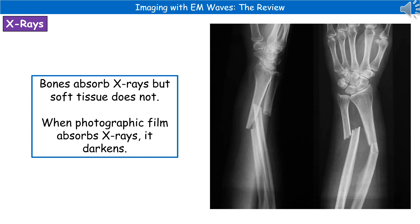Soft tissue — skin and muscle — does not absorb X-rays. So when photographic film is placed beneath the body part being imaged, the X-rays absorbed by bones leave a lighter, white patch. Where X-rays pass through soft tissue, they are absorbed by the photographic film instead, making it darker. This difference in contrast lets you clearly see what the issue with the limb actually is.